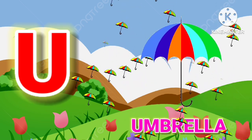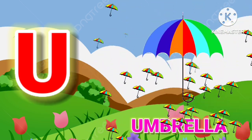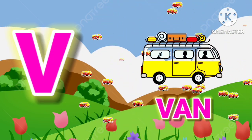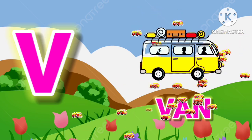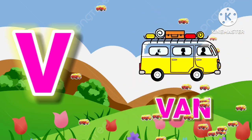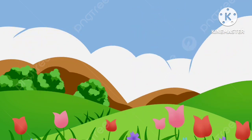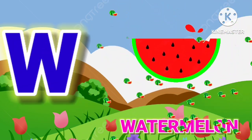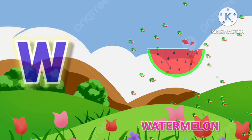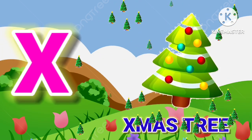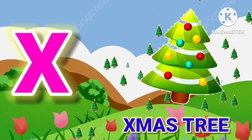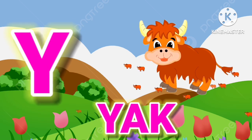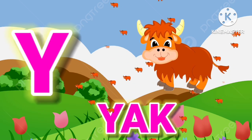U for umbrella, V for van, W for watermelon, X for x-mystery, Y for yak.